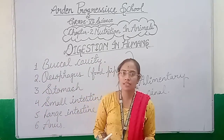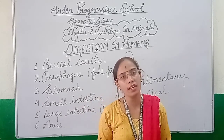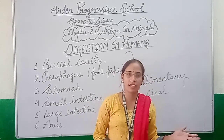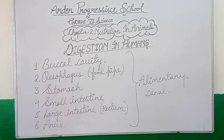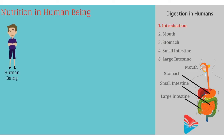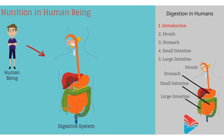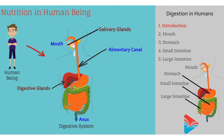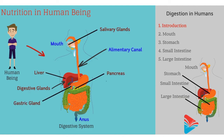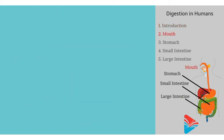So with the help of a diagram, we discuss the different parts of the alimentary canal. Nutrition in human beings takes place with the help of the digestive system. The digestive system includes the alimentary canal and digestive glands. The digestive system starts from the mouth and extends up to the anus. Salivary glands, liver, pancreas, and gastric glands are the glands of the digestive system.